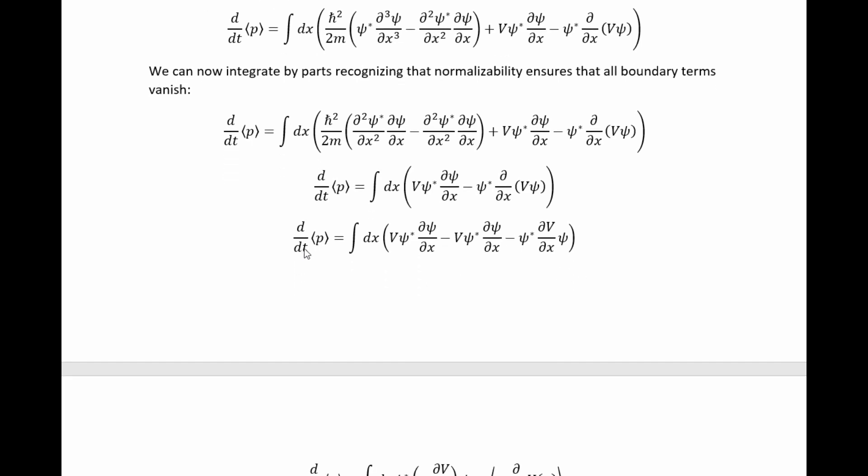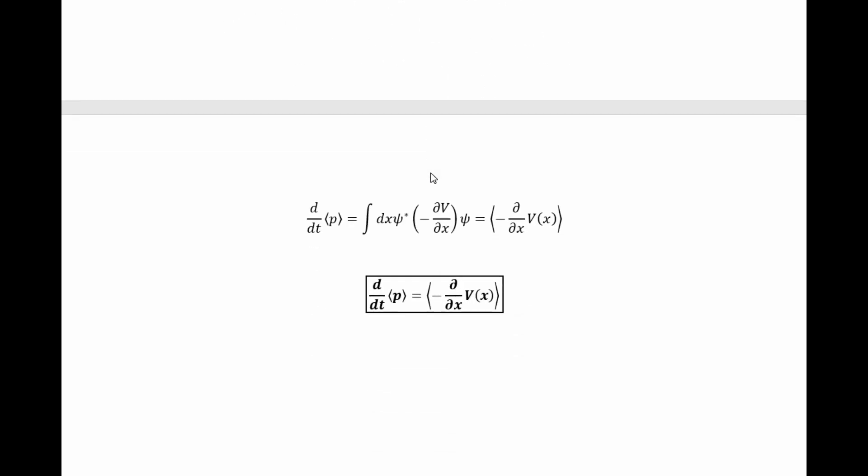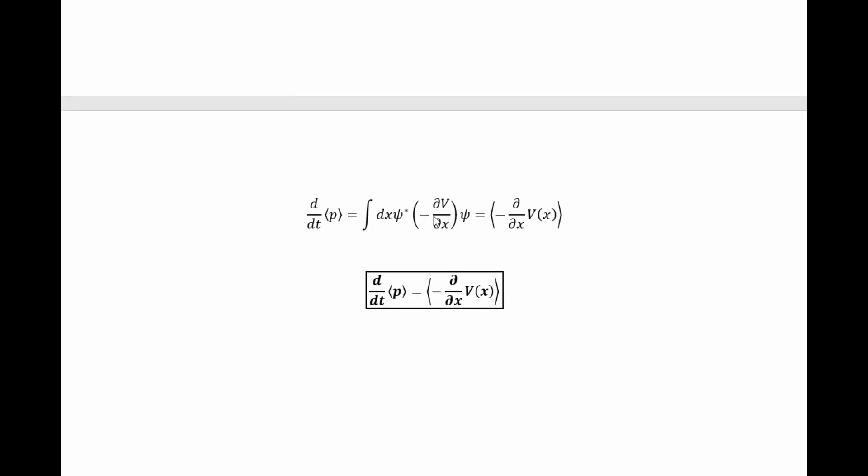So now we can see that the value of this time derivative of the momentum expectation value is simply this through use of the product rule on this last term there. Then we find that these two things cancel, and we ultimately get down to here. But then this is just the expectation value of negative the derivative of the potential. It's just the expectation value of the force.